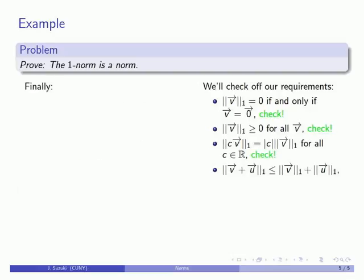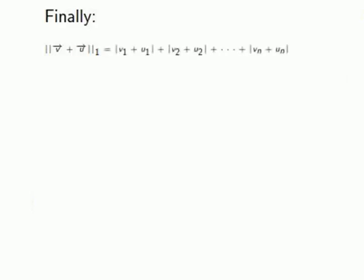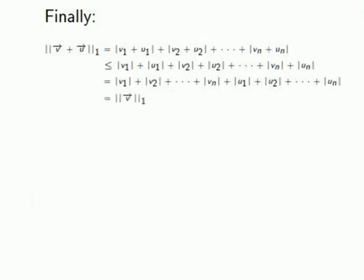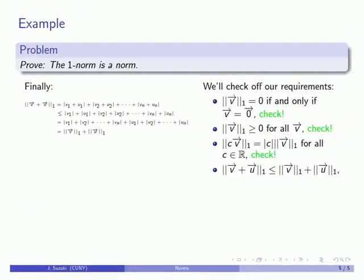Finally, we check the triangle inequality by finding the 1-norm of the sum of two vectors. We find that 1-norm as the sum of the absolute values of the sums of the vector components. Because the vector components are real numbers, the absolute value of a sum is less than or equal to the sum of the absolute values. We can then separate the absolute values into those of the components of the first vector and those of the second vector, and rewrite the sum. The first part equals the 1-norm of the first vector and the second part equals the 1-norm of the second vector — so the triangle inequality holds for the 1-norm.